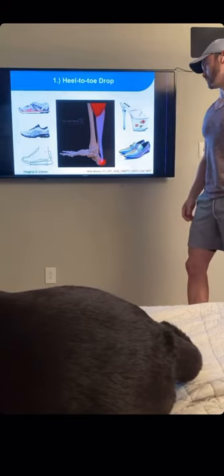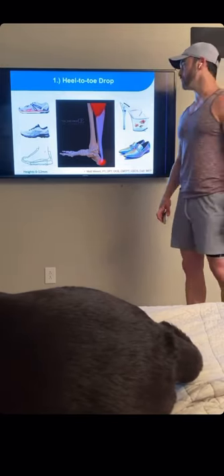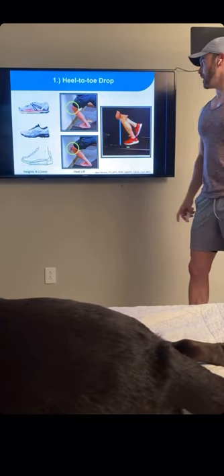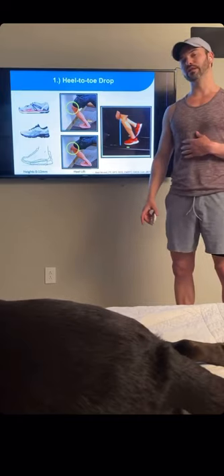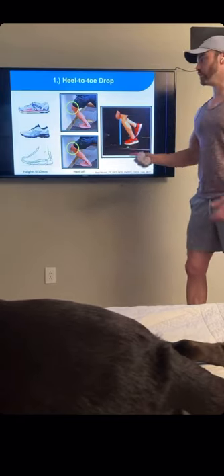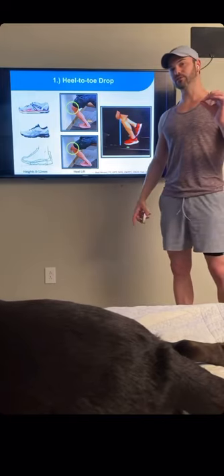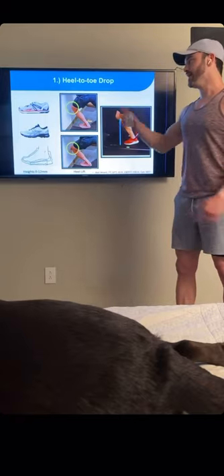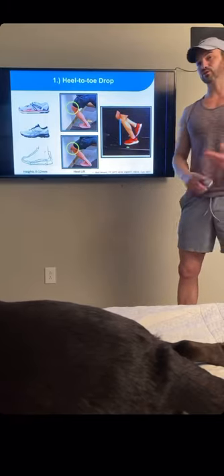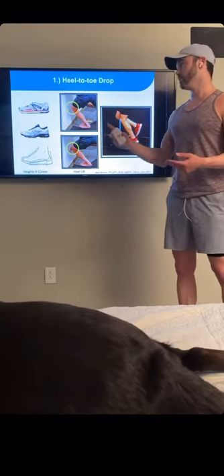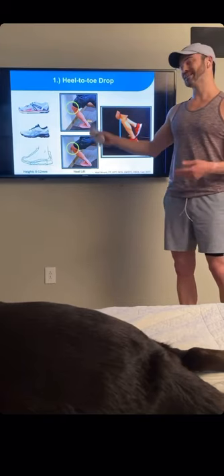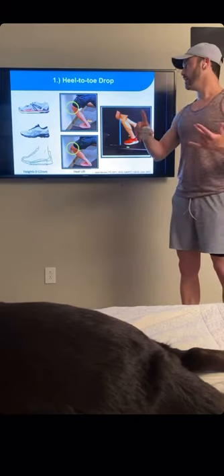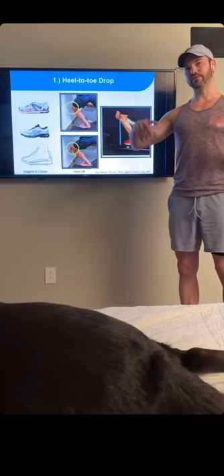On the other end of the spectrum, if someone is lacking ankle dorsiflexion range of motion — the ability to get your knee past your toe — having a shoe with a slightly higher heel can compensate for that. We'll do a test tomorrow to check range of motion. If someone can't squat, one of the first things we'll do is raise their heels up, which reduces the dorsiflexion demand. So if someone has really tight ankles, a history of ankle sprains, it might not be the best idea to put them in a zero drop.